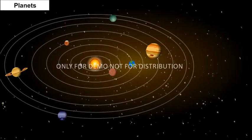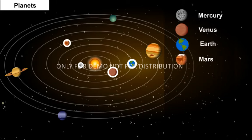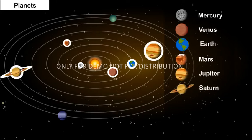Mercury, Venus, Earth, Mars, Jupiter, Saturn, Uranus and Neptune.